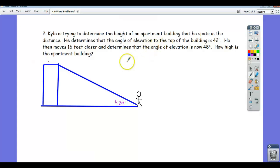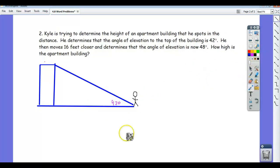Then it says he moves 16 feet closer. So if he moves 16 feet closer, that means he moves closer and he's right here. Let's say 16 feet closer brings him right here. So let's draw in, so like he moves 16 feet closer and now he's here. So now he's like right here.